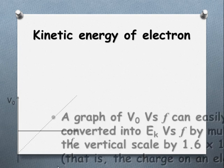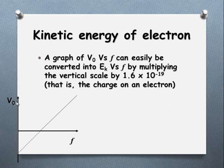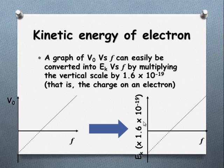We can convert a stopping voltage versus frequency graph into a kinetic energy versus frequency graph by multiplying the stopping voltage by 1.6 times 10 to the negative 19 to put it into joules.